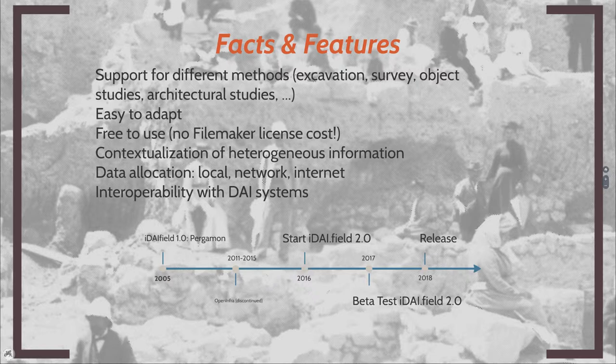Still, there were huge differences in how they used the same systems in the field across different projects. Of course, a project dealing with building research or with street networks will have different data to collect and therefore produce a different system. But from the usage statistics we gathered, we could clarify what was necessary and what was not, and what was just making the structure more complicated. So we got rid of all of that, and that then constituted our new data model.